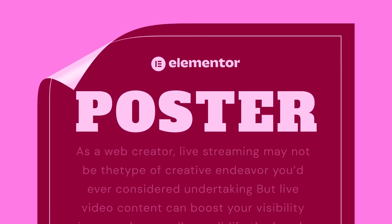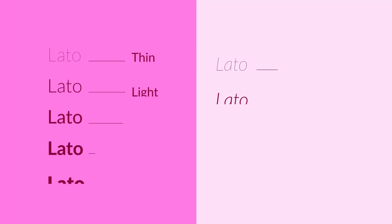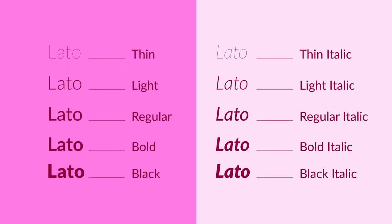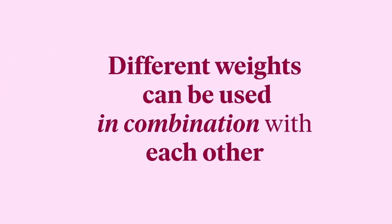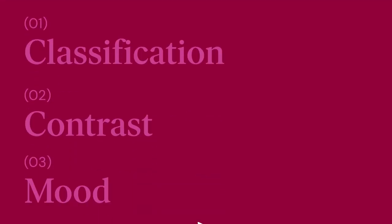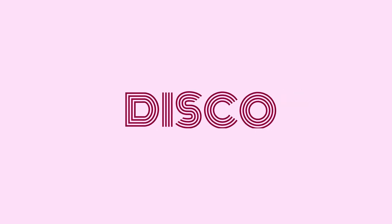Display fonts are usually very distinctive. Another way we can characterize fonts is through contrast — many font families include a variety of different weights, which can be used in combination with each other. We can also characterize fonts by mood. Fonts can convey emotion and be used to transmit different messages, such as feelings and time periods. Now that we know how to characterize fonts, we can take a look at three different pairing methods.